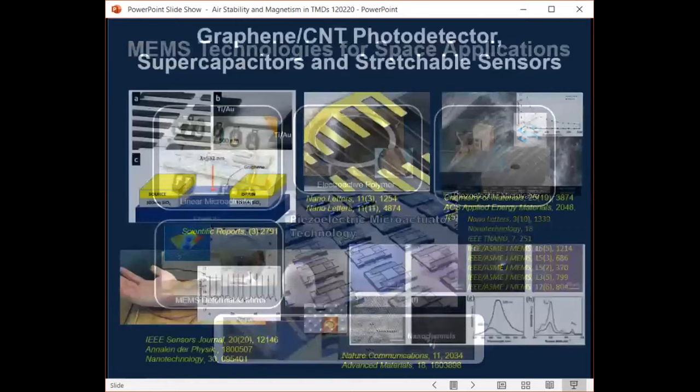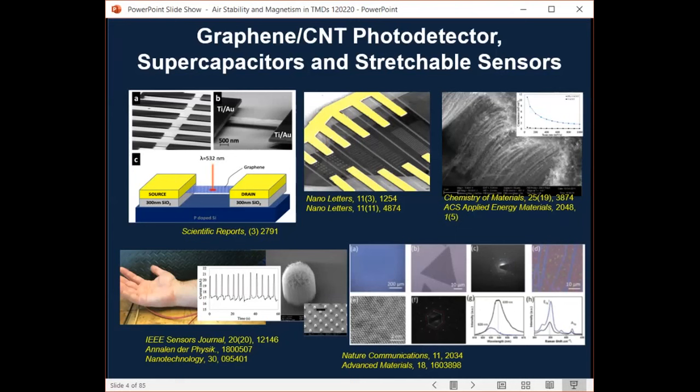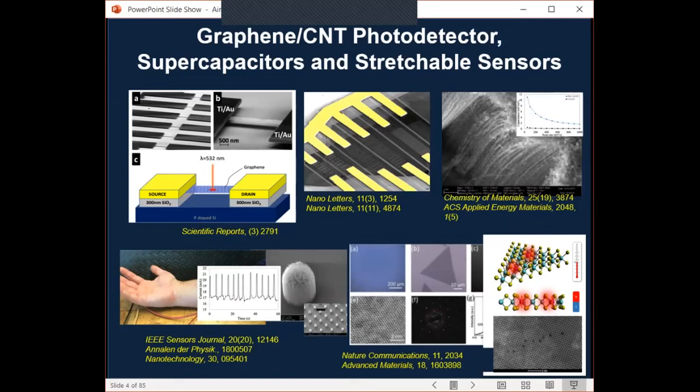And I moved to Stevens in the year of 2006 and shifted gears to the nanomaterials research. And my group explored graphene growth and graphene photodetectors as well as carbon nanotube based stretchable supercapacitors and sensors. We have also worked on CVD growth and characterization of TMDs. And our recent research interests included synthesis and characterization of 2D dilute magnetic semiconductors based on TMDs.